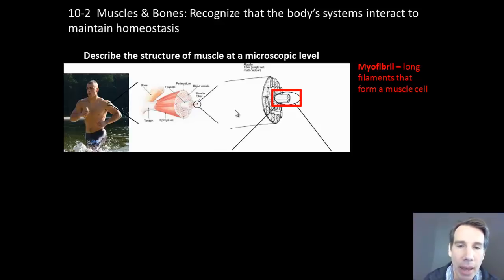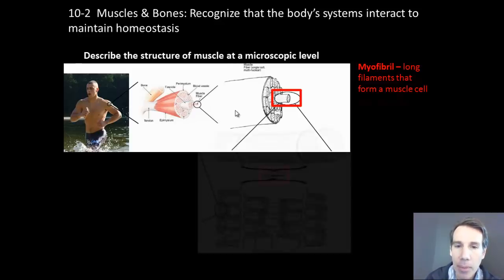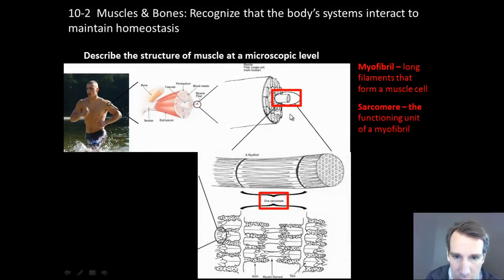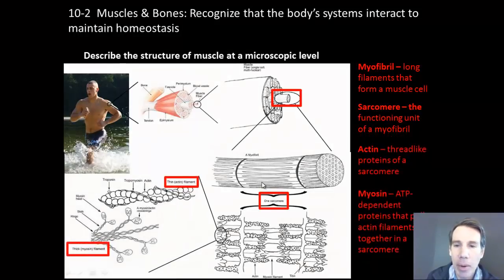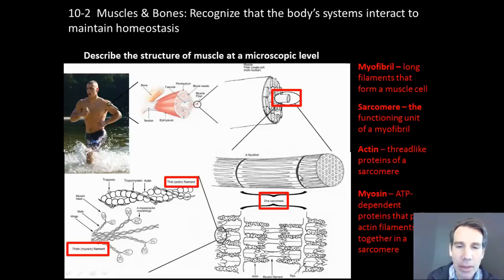That muscle cell is made of cable-like structures called myofibrils. A myofibril has dark areas and light areas on opposite sides. The darker areas are produced by a protein called myosin, which is dependent on ATP to work. Flanking the myosin are proteins called actin — spelled with an 'i' — which are thinner and lighter colored. Let's explore how actin and myosin work to cause movement.